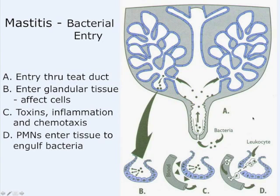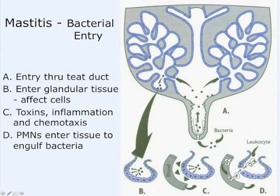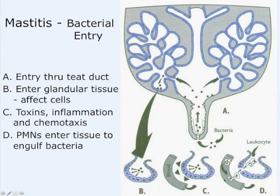Mastitis is bacteria getting into the mammary gland through the teat canal into the milk. Milk is a great substance for bacteria to grow in, so they multiply rapidly. They get up into the milk-secreting tissue, the alveoli, and secrete toxins that damage cells and change milk secretion. Products of this reaction attract white blood cells — leukocytes, also called somatic cells or neutrophils — to fight the infection.